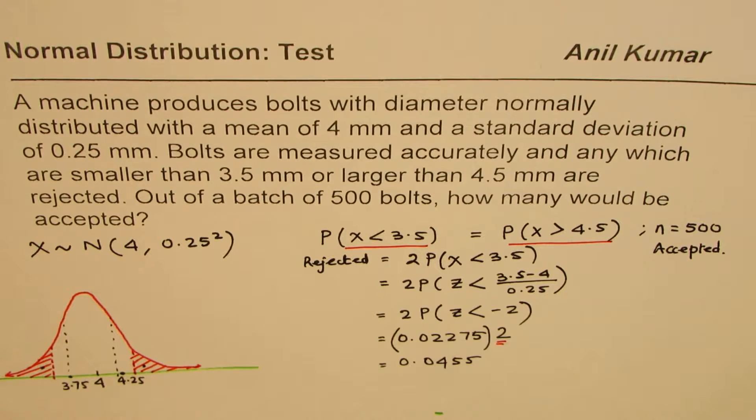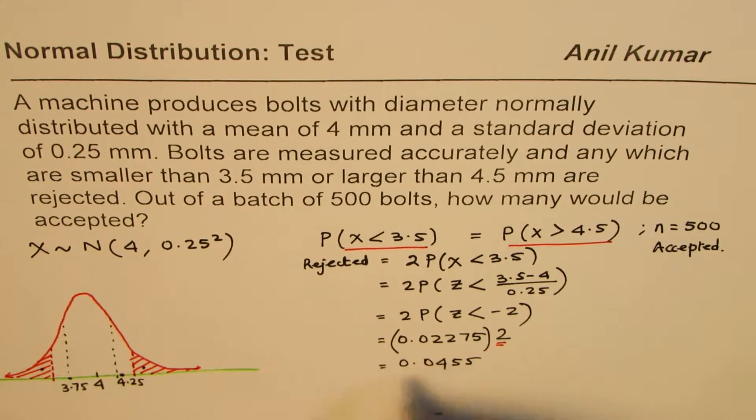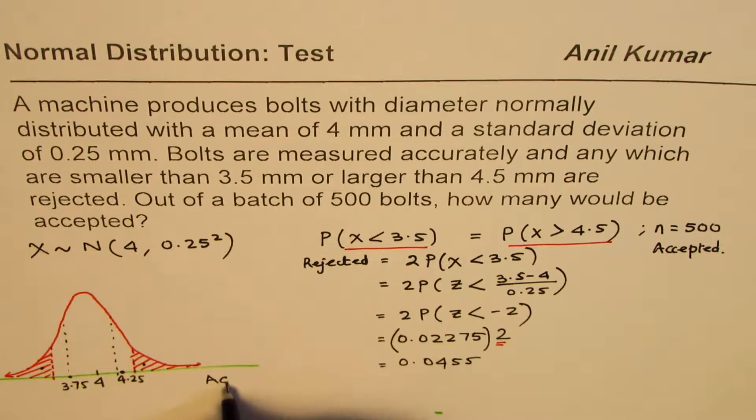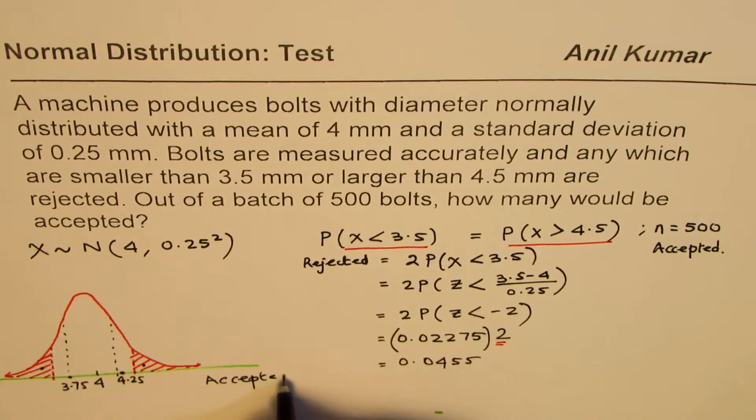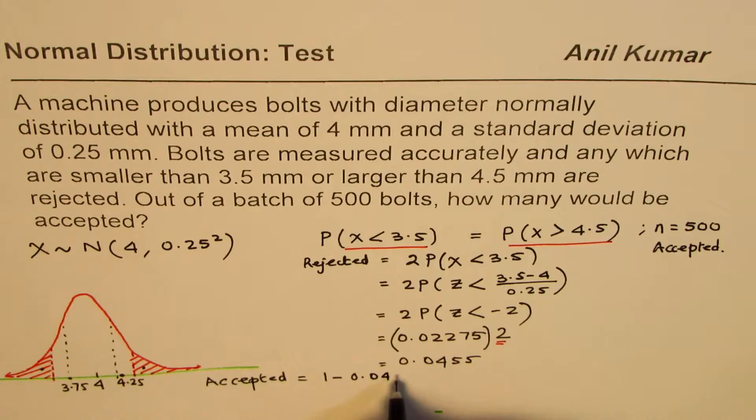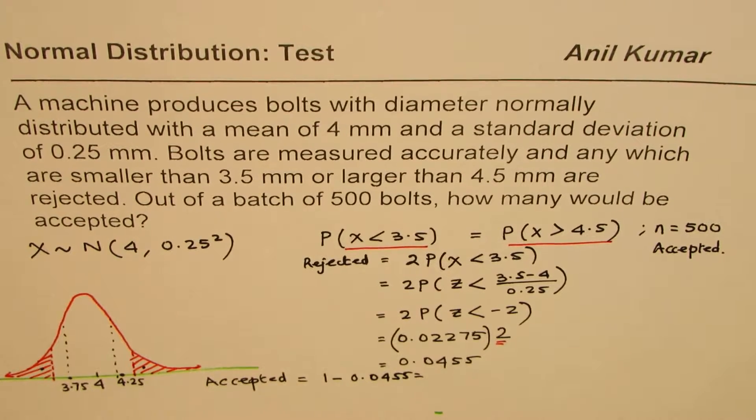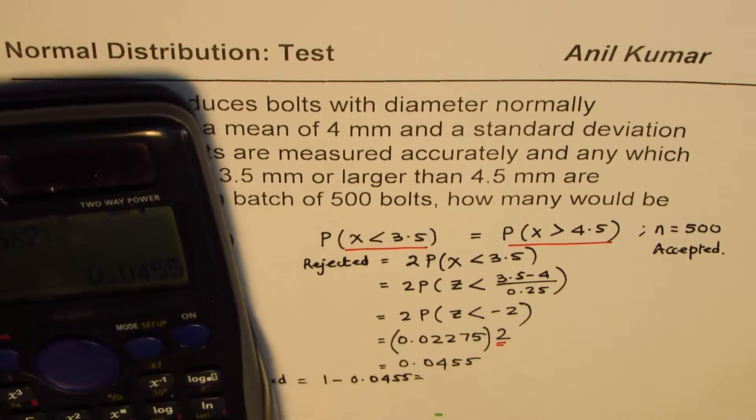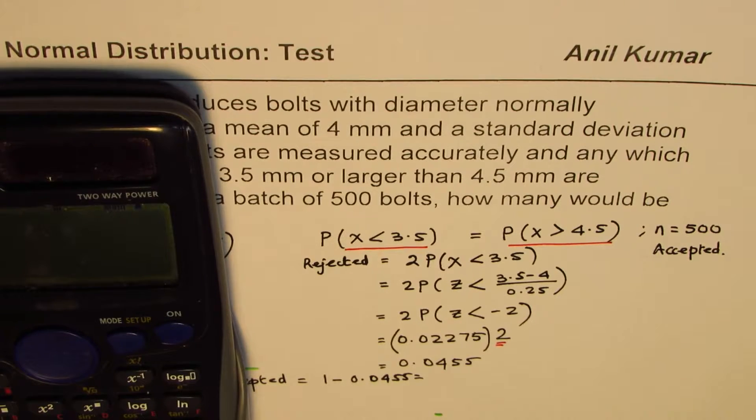So that's the probability of rejection. Now how many will be accepted? The idea is to find how many will be accepted. So accepted probability will be 1 minus this number 0.0455.